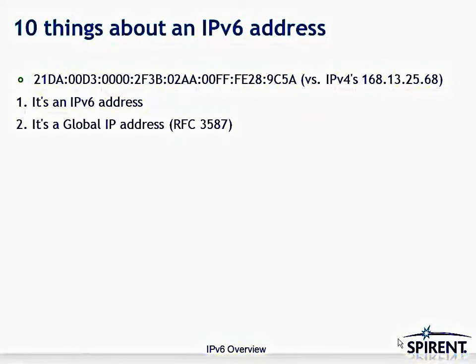Now let's look at 10 things about an IPv6 address. An IPv6 address looks complex — it's in hexadecimal, referred to as colon-hexadecimal, using hex digits separated by colons to represent 128 bits, versus IPv4's dotted decimal for 32 bits. First, it is an IPv6 address. Second, it's a global IPv6 address as per RFC 3587 — I know that because it begins with either a 2 or a 3.